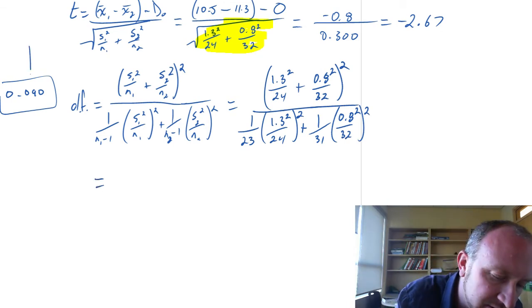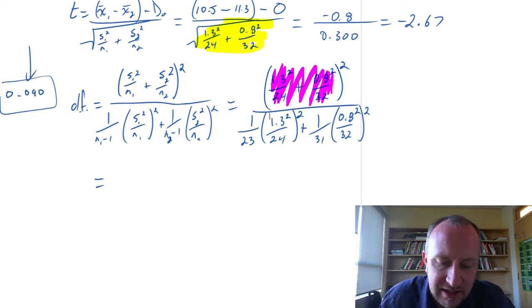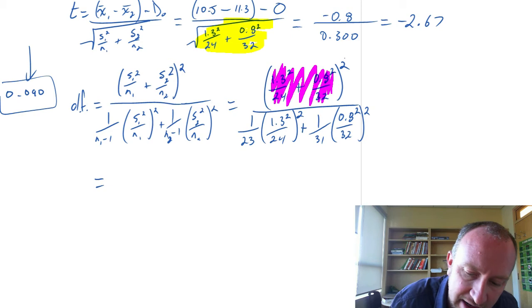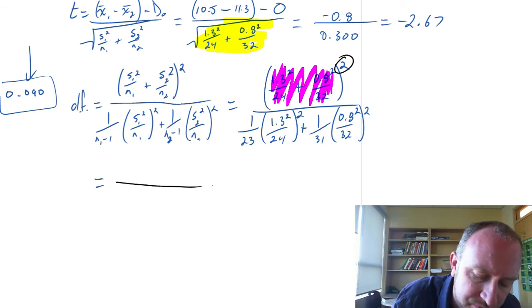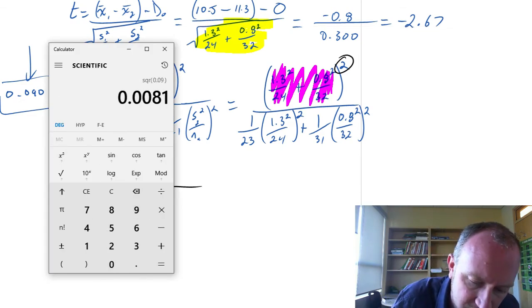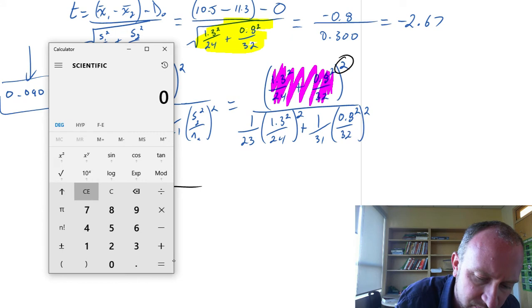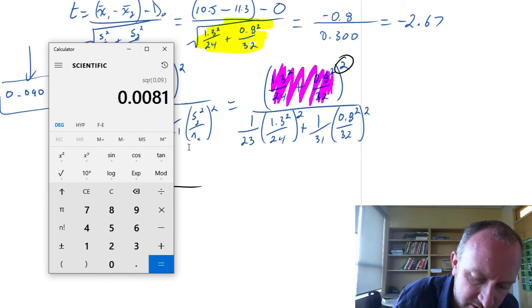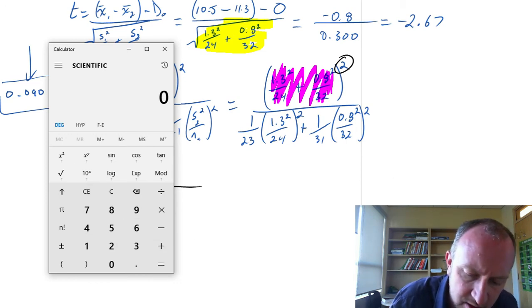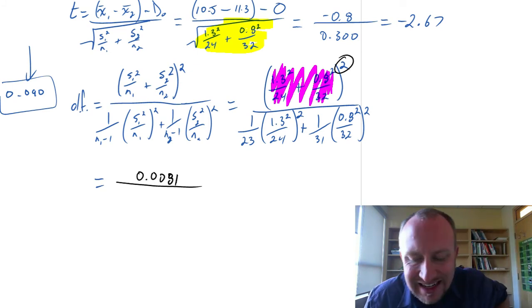This is 32 minus 1. So this is 31 times 0.8 squared over 32. And all that is squared again. So I already have, this is why I wrote down this 0.09 because that's what's inside those brackets here. So all I need to do for my numerator is to square that again because I've got this square up here. So if I get my calculator out, this is going to be 0.090 squared is my numerator. So 0.0081. Let me do that again just to be safe. 0.0081 is my numerator.